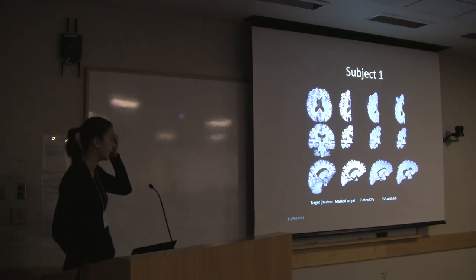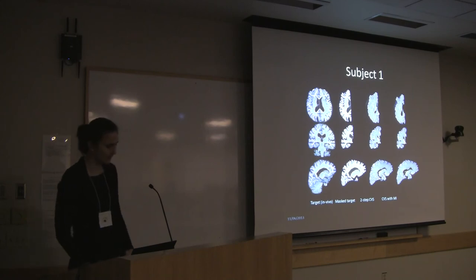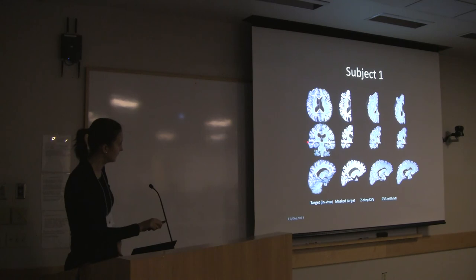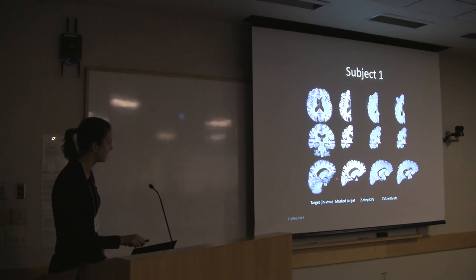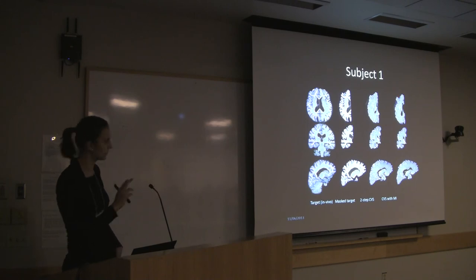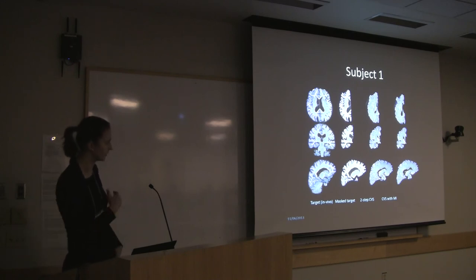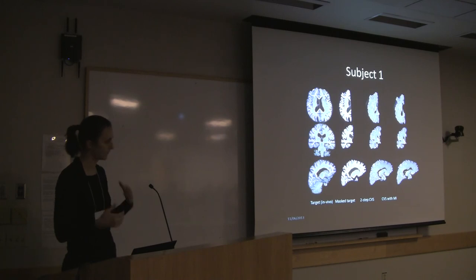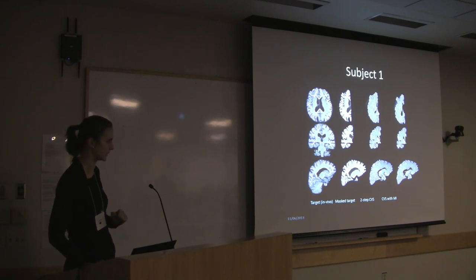Here on the left-hand side you see the in vivo acquisition used as a target image. Then we have the same in vivo acquisition but masking one hemisphere, given that our ex vivo sample had only a single hemisphere. On the right-hand side I'm showing a two-step and the full CVS solution — two different stages of the CVS registration process. We are currently overlaying surfaces extracted from the target image with respect to the intensity volumes, and working on manually labeling some of these datasets to provide quantitative results describing the performance.